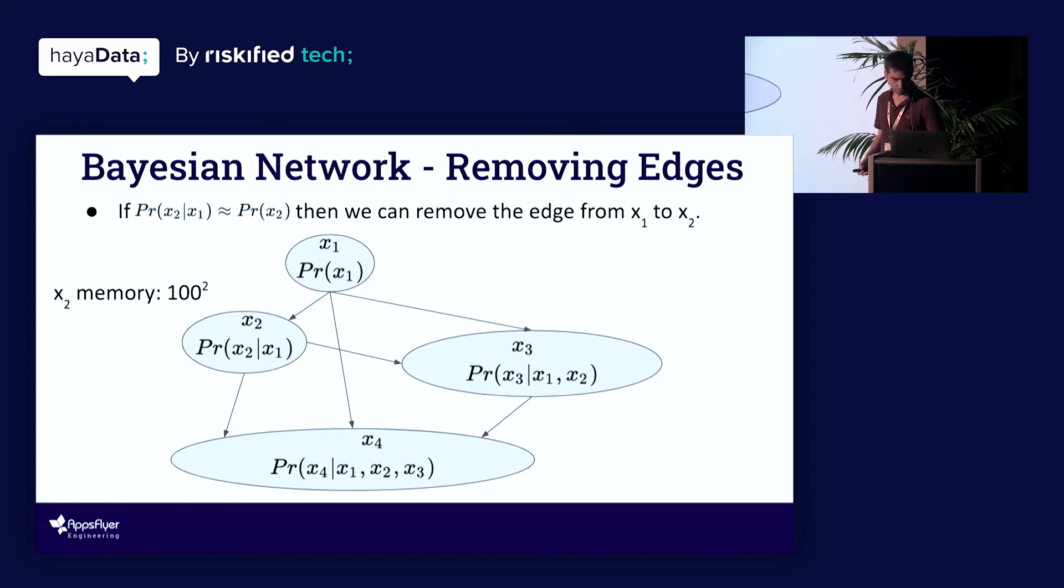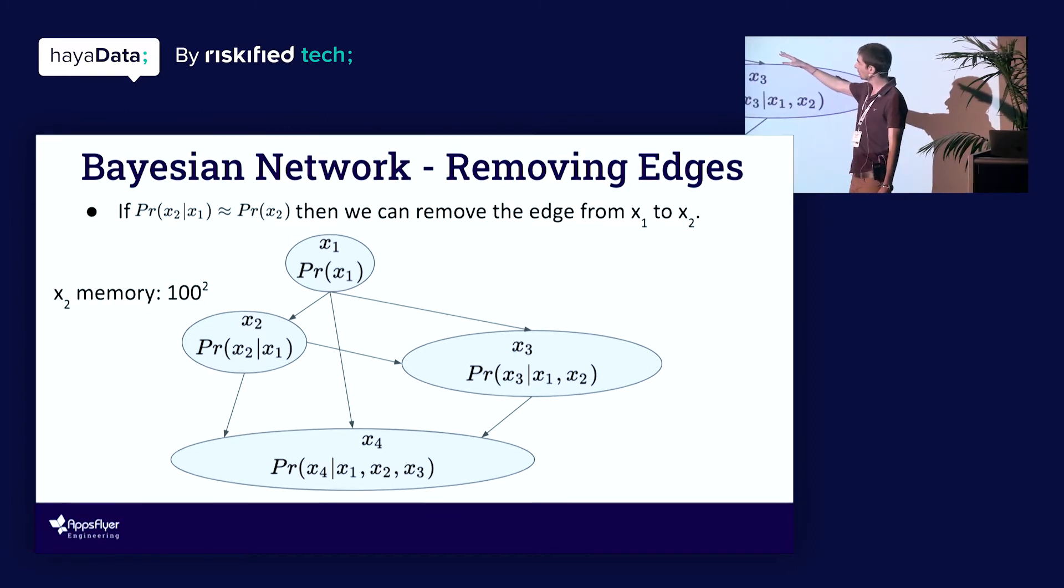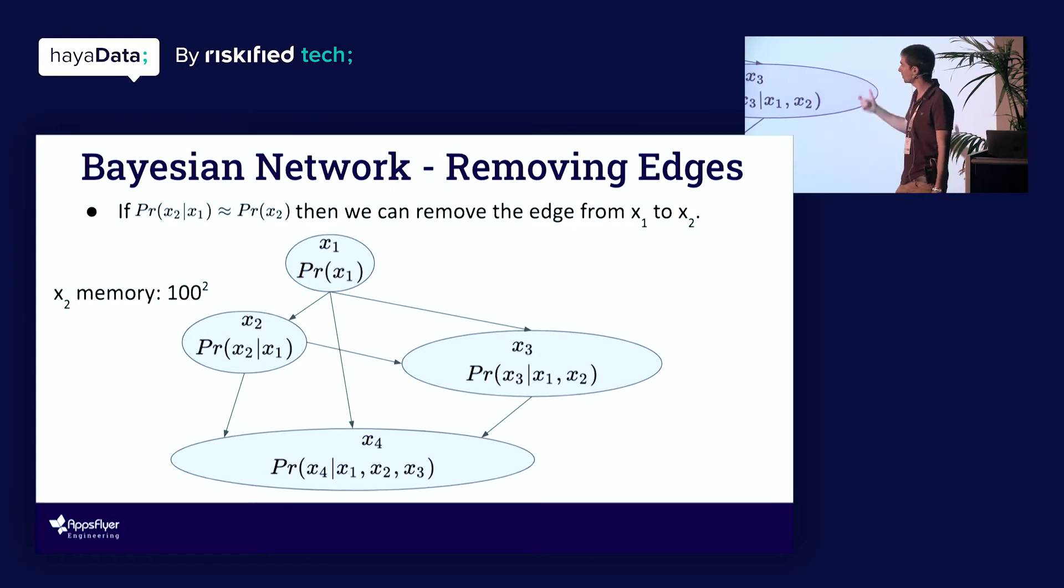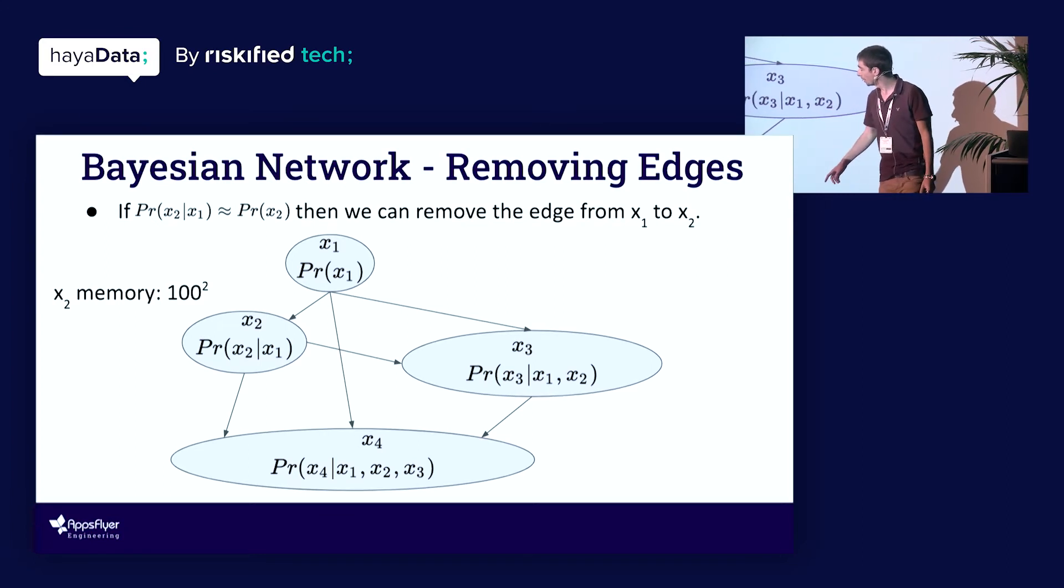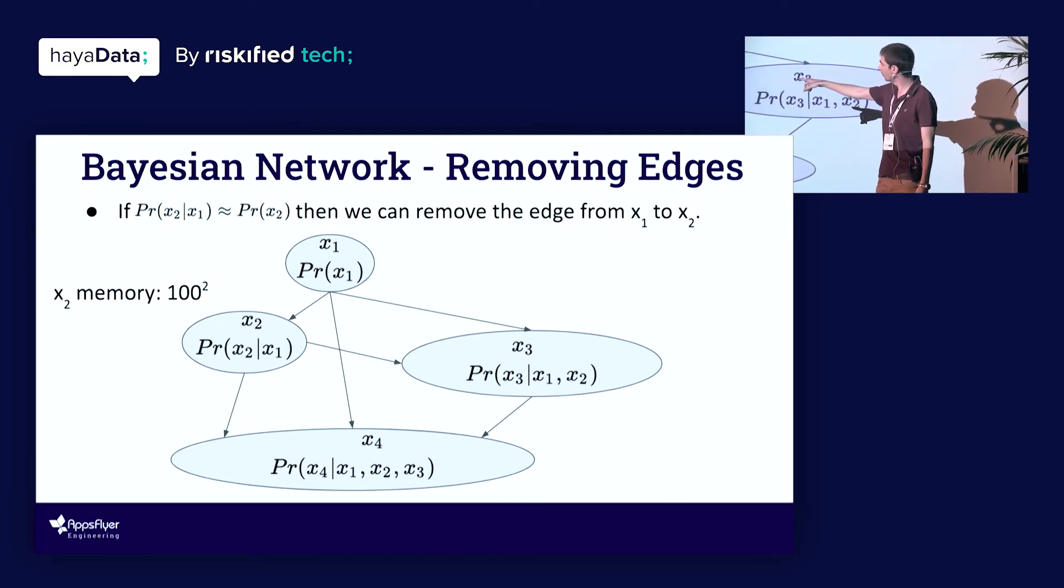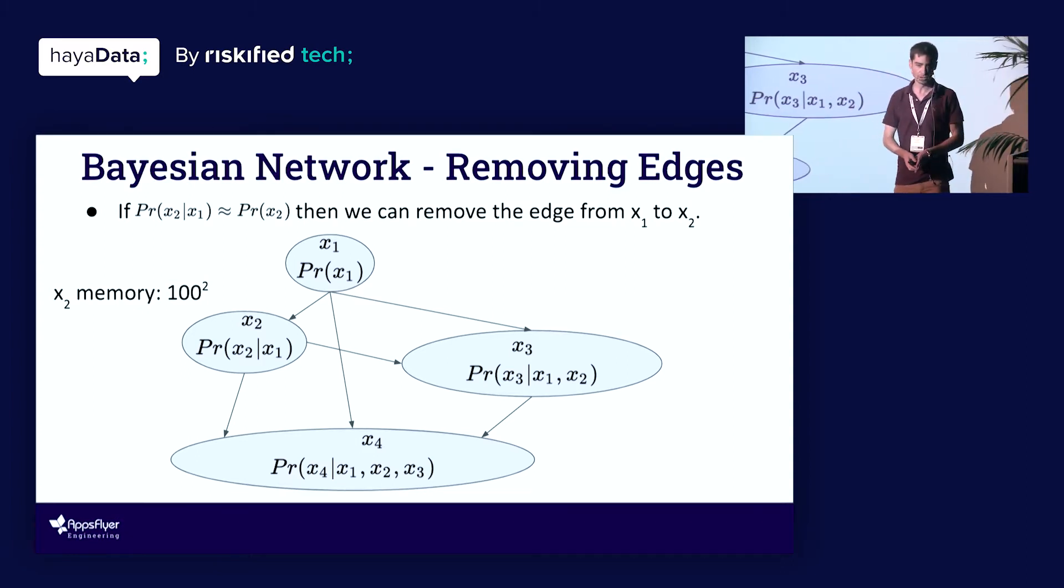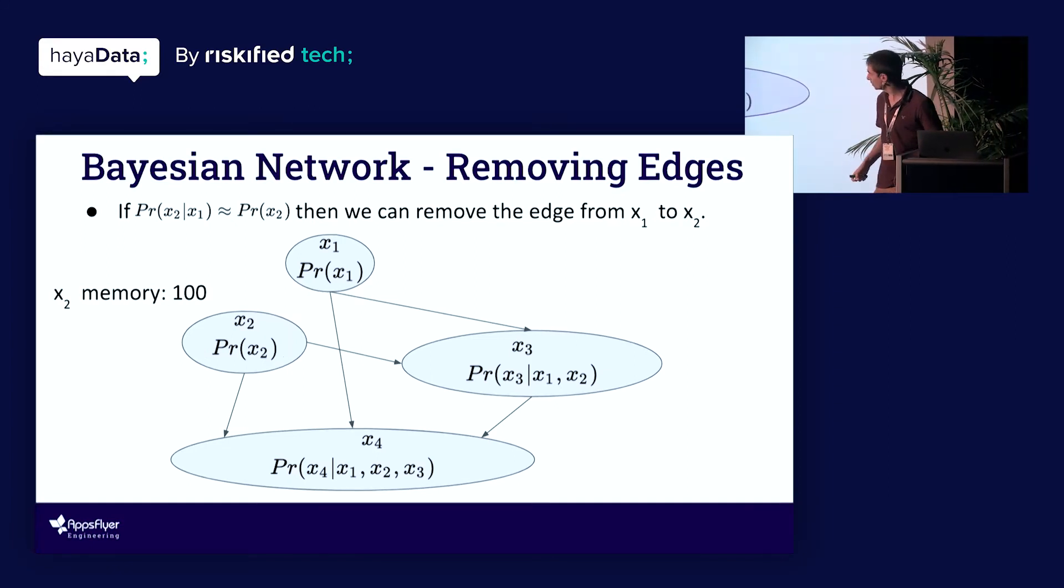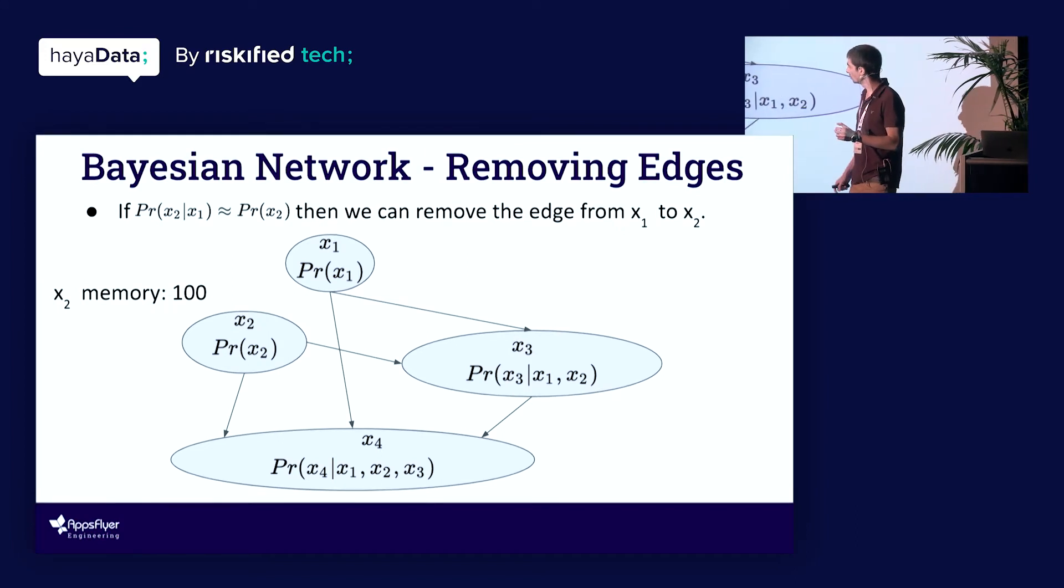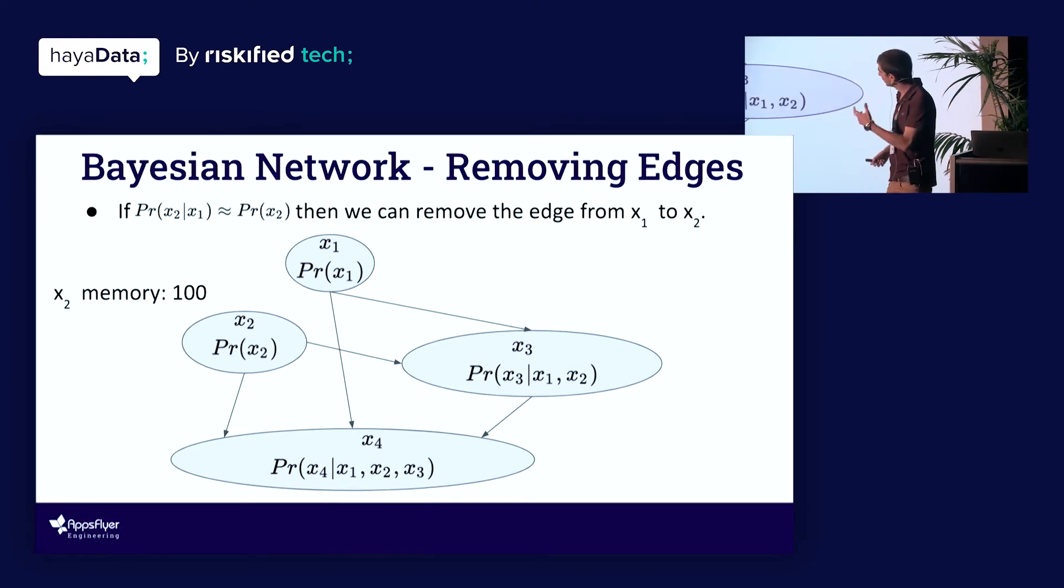And then we're going to start off removing edges. Now let's say that the probability for seeing x2 given x1 is roughly the same as just seeing x2. In other words, x1 and x2 are independent. Then we can remove the edge from x1 to x2. And then if right now for x2 we're going to have a memory of something like a hundred squared, if there's a hundred values for x1, a hundred possible values for x2, then for every combination of them we're going to have to store what's the probability for this combination in memory. Then now this is going to be reduced to just a hundred. So we've removed this edge. We've reduced the complexity for node x2.